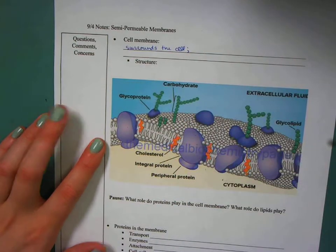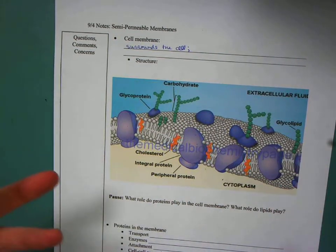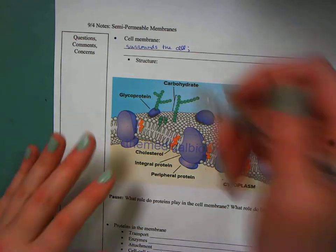But in order for products to come out of the cell, products like protein which the ribosomes are making, or in order for water to come in or out so the cell can maintain homeostasis, this membrane has to be permeable.